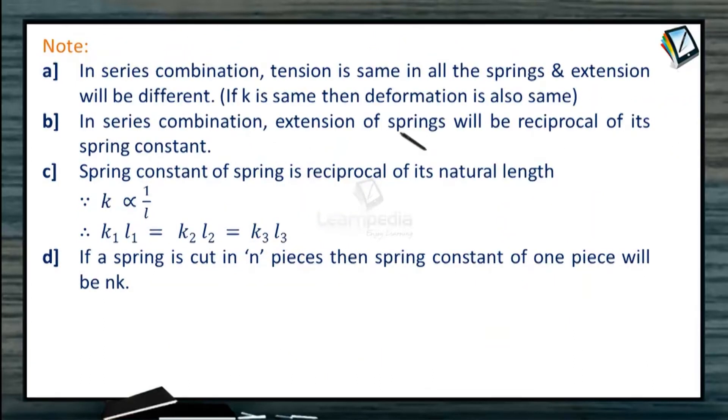So in series combination tension is same in all the springs and extension will be different. In series combination extension of springs will be reciprocal of its spring constant. As we have seen that F is same then elongation or the compression has to be F by K. So inversely proportional to the spring constant.